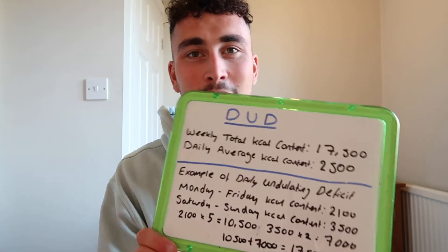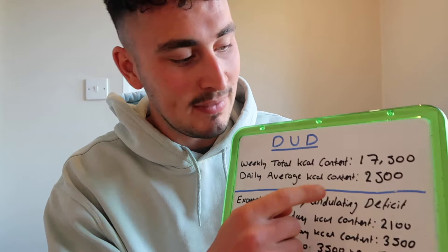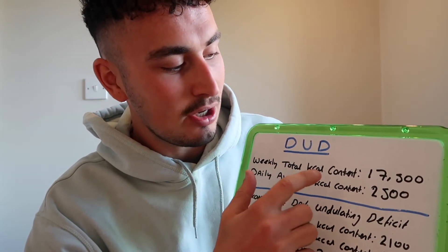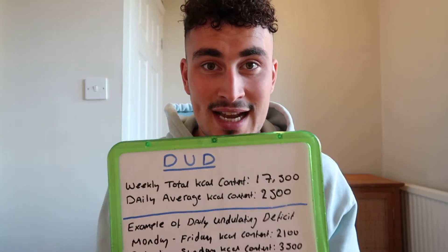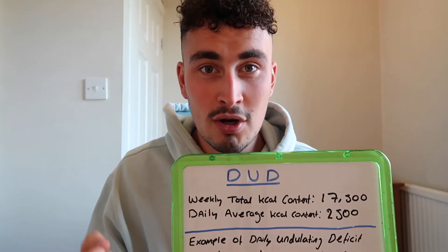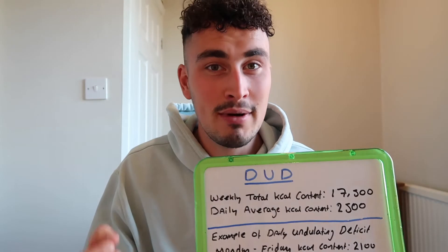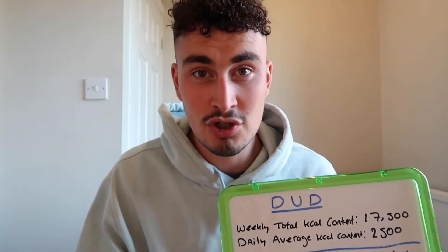I've done the case study on a whiteboard here to make it a bit easier to see. It's a male individual whose maintenance calorie content is 3,000 calories a day. We put him on a 500 calorie deficit, so his average daily calorie content is 2,500 calories — that's essentially how it normally works, giving a weekly total of 17,500 calories. The issue is this individual struggles at the weekends because he's very social — he likes to go out for dinners, drinks, and Sunday lunch with his family.